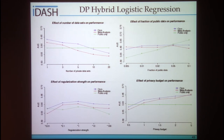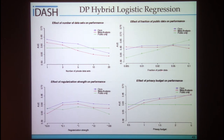We also tried different parameter combinations — varying the division of private data across 1 to 20 institutions, changing the ratio of public data available, changing the regularization parameter, and varying the privacy budget. In most cases, our method dominates the curve.